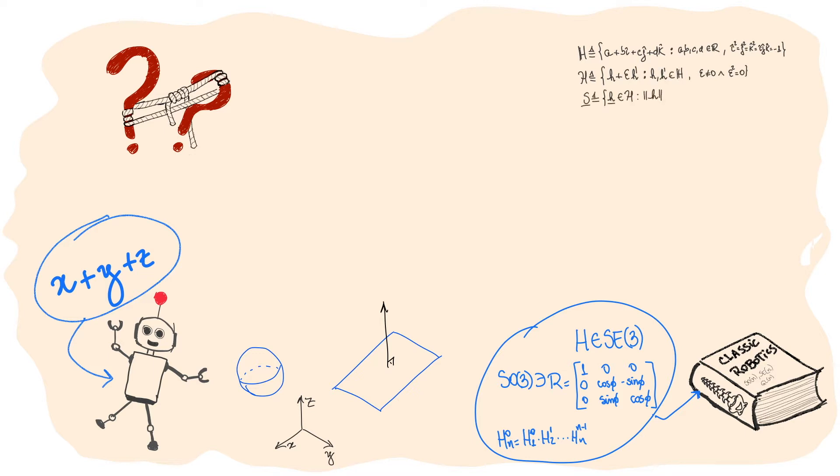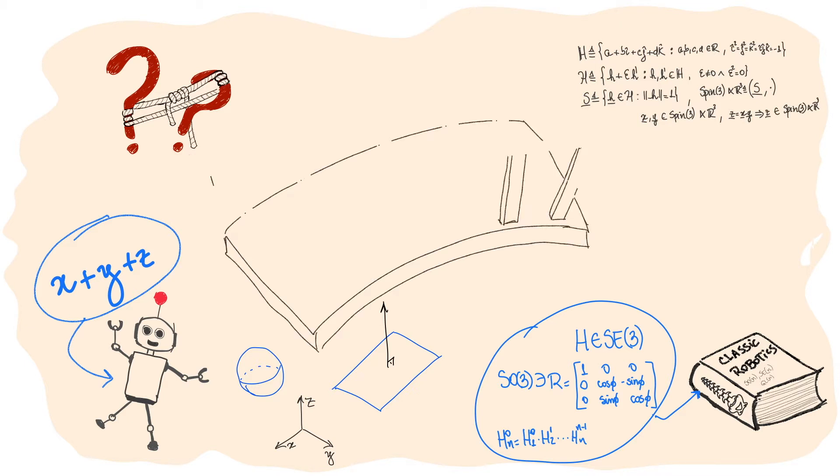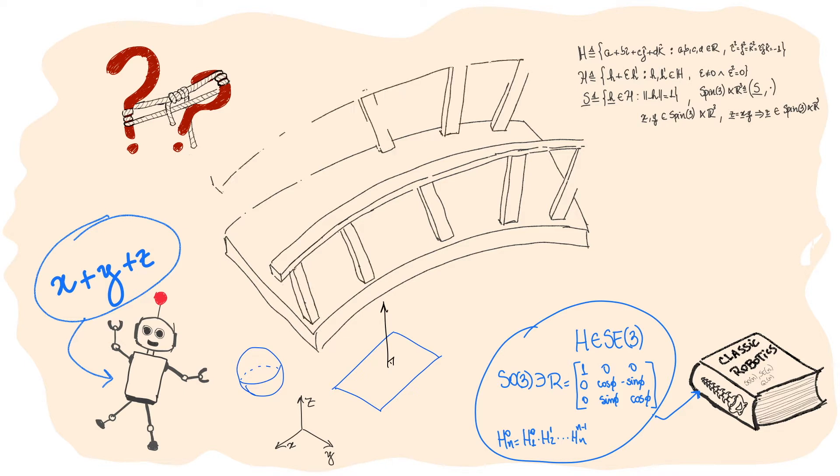To bridge this gap between theory and implementation, we introduce Diki Robotics, a library for robot modeling and control employing dual quaternion algebra that is easy to use, intuitive enough to be utilized for self-study and education, and computationally efficient for deployment on real applications.